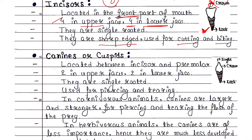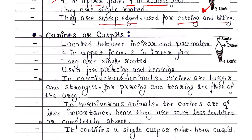Next is canines or cuspids. They are located between the incisor and premolar. Total four canines are found in humans — two are found in the upper jaw and two are found in the lower jaw. They are also single rooted. They are used for piercing and tearing. In carnivorous animals, canines are larger and stronger, used for piercing and tearing the flesh of prey.